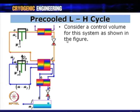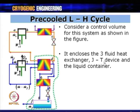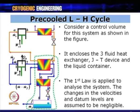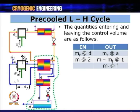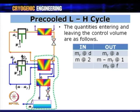To analyze the circuit, a control volume is defined excluding the compressor and enclosing the three-fluid heat exchanger, the main heat exchanger, the JT device, and the liquid container. Applying the first law with negligible velocity and elevation changes: quantities entering are m_dot_r at point D and m_dot at point 2; quantities leaving are m_dot_r at point A, (m_dot − m_dot_f) at point 1, and m_dot_f at point F.